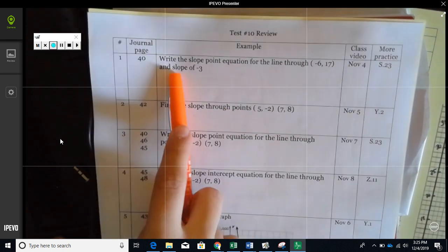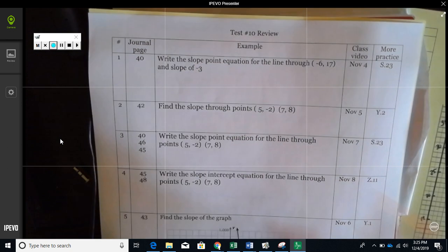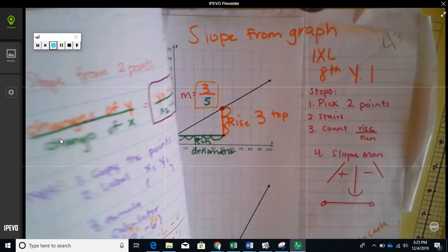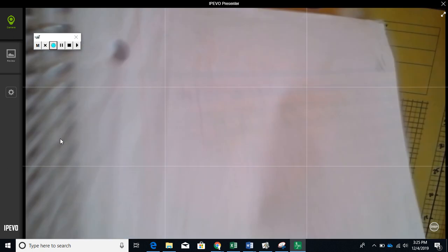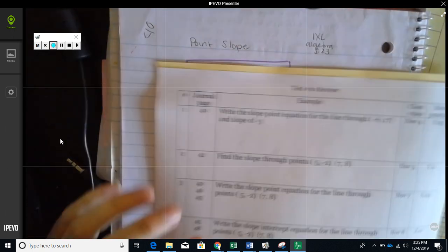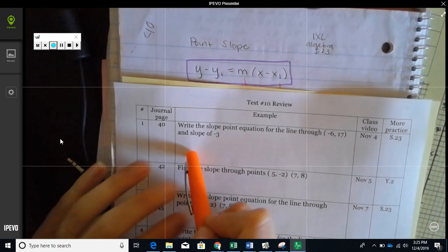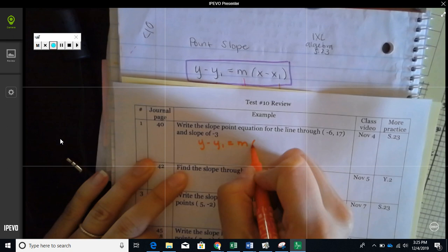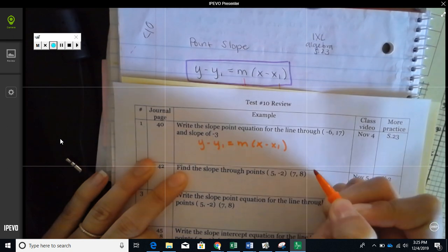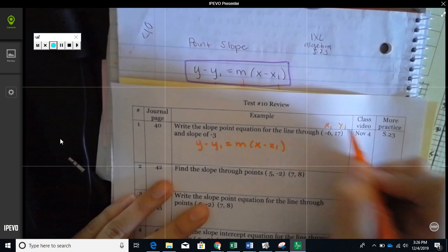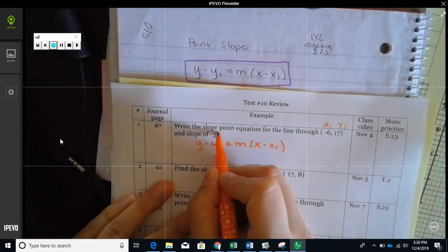I'm going to walk with you through number one, and what you're supposed to do is write it in point-slope form. It's on page 40. Here's the point-slope equation, so that's what I'm going to use. I write y minus y1 equals m in parentheses x minus x1.